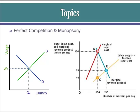Subtract 48 from marginal revenue product of labor and you get the change in profit. In the second question, you don't have the monopsony chart. To answer the question, state how the wages and number of workers compare to perfect competition. Does the monopsony hire more, fewer, or the same number of workers? And does it pay more, less, or the same as a perfect competitor?